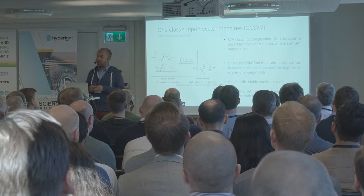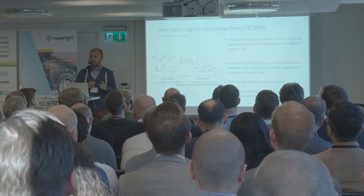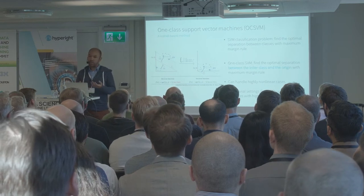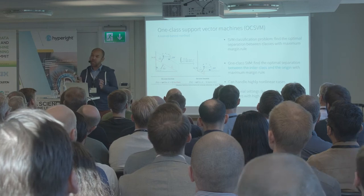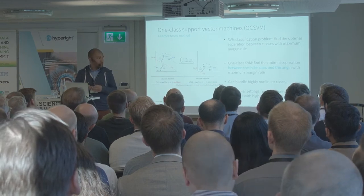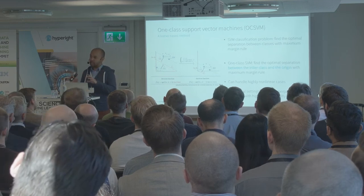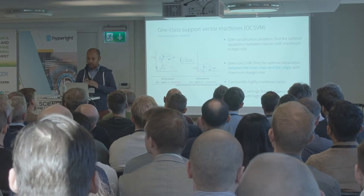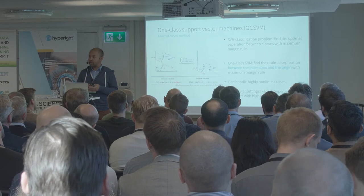The first one is called one-class support vector machines. In the supervised case, you have a binary classification problem and you want to draw an optimal boundary between your two classes, potentially by moving your points into another space, which we call the kernel space. In the unsupervised case, the idea is that you only have one class representing normality, and you want to move those data points into the kernel space and define a boundary between normality and the origin of the kernel feature space. This algorithm can handle very well highly non-linear cases, but can struggle when you have to define hyperparameters that are far from trivial, and also with high dimensional datasets.